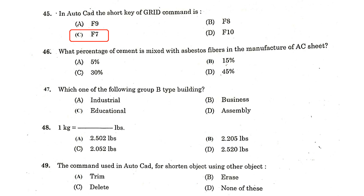What percentage of cement is mixed with asbestos fibers in the manufacture of AC sheets? 15 percent. Which one of the following is a Group B type building? Options: industrial, business, educational, assembly. The answer is educational.